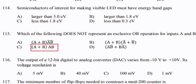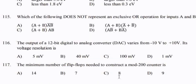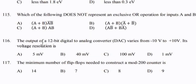The output of a 12-bit digital-to-analog converter varies from minus 10V to 10V. The voltage resolution is — this is from a previous question paper — option A: 5 mV.